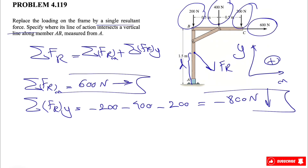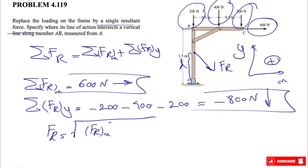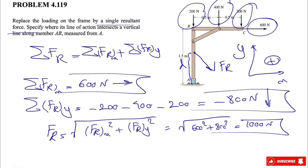Now that we have the force in x and y direction, we can find the magnitude of FR. FR equals the square root of the x component squared plus the y component squared, so we have √(600² + 800²), which gives us 1000 N.